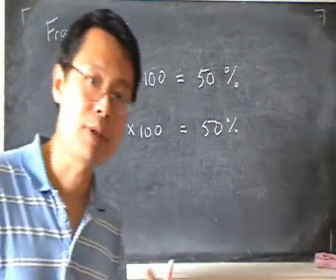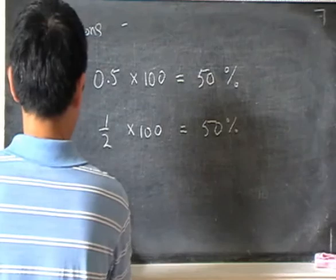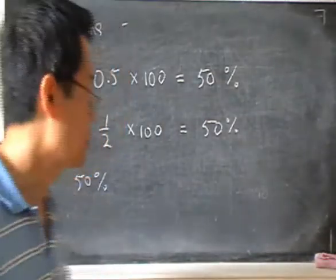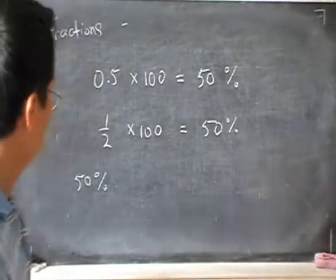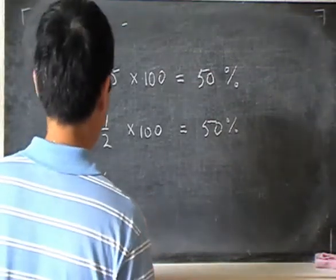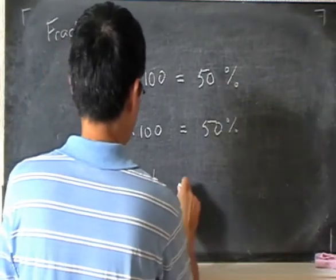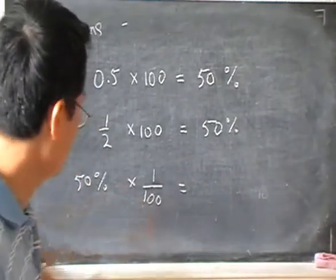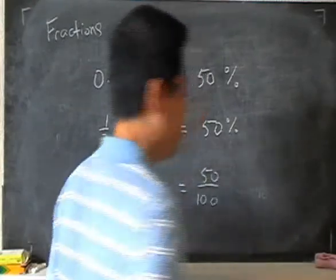Now what if I want to do the opposite? What if I want to convert 50% to a decimal fraction or a vulgar fraction? Now if I want to convert it to a fraction, I will take 50 and multiply by 1 over 100. So 50 over 100. I will get 50 over 100. That's my fraction.